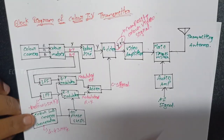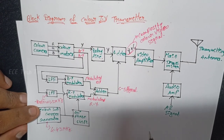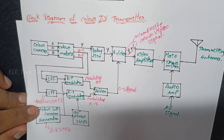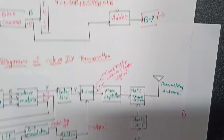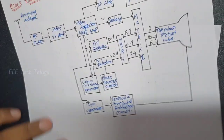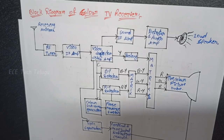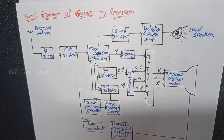I have given an explanation in the previous video. We covered the transmitter, receiver, and also the chrominance signal. Chrominance and luminance signals are used in NTSC color TV transmission.